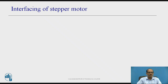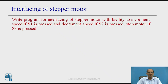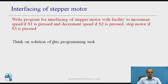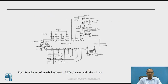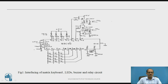In this way we have checked whether the 7-segment displays are working. Next: write a program for interfacing of a stepper motor with the facility to increment the speed if S1 is pressed, decrement the speed if S2 is pressed, and stop the motor if S3 is pressed. The switches are used for incrementing and decrementing speed, and port lines P2.0, P2.1, P2.2 and P2.3 are used for the stepper motor.